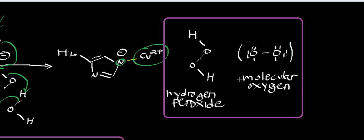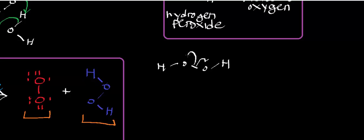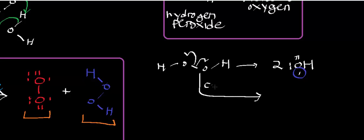Hydrogen peroxide is also toxic. If left unchecked, it can undergo homolytic bond cleavage, generating two hydroxyl radicals. The hydroxyl radical is not hydroxide — with hydroxide, the oxygen has a negative charge — whereas here the oxygen is neutral overall because it carries a free radical, which is tremendously reactive and dangerous. So you would expect an enzyme to get rid of hydrogen peroxide, and indeed there is one: catalase, one of the fastest enzymes known to man, which we'll discuss in the next video.